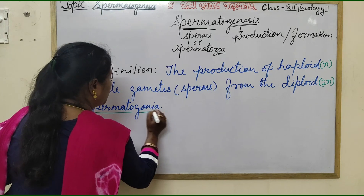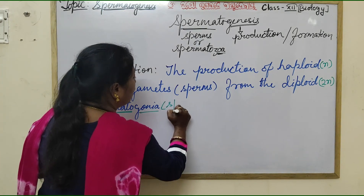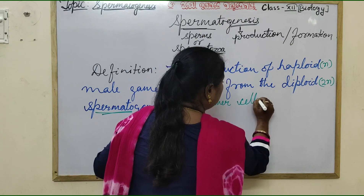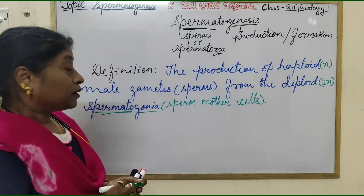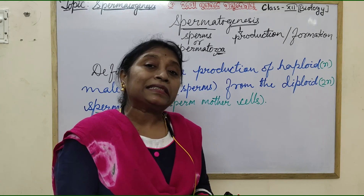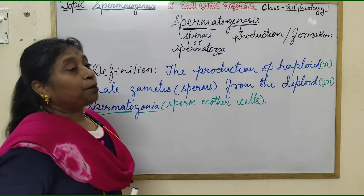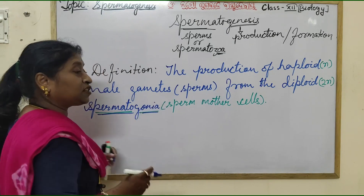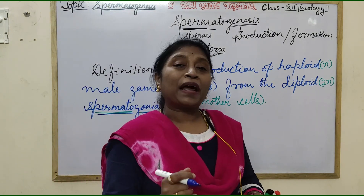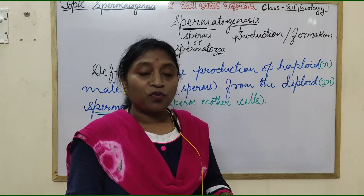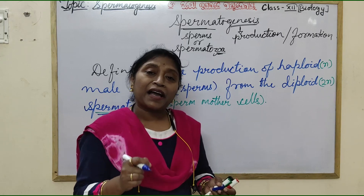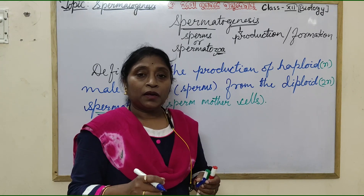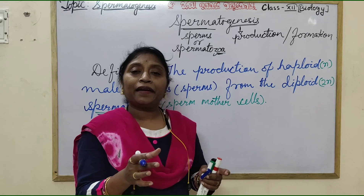What is spermatogonia? Spermatogonia are the sperm mother cells. The spermatogonia are the successors of the primordial germ cells — meaning they are derived from primordial germ cells. The primordial germ cells are derived from the endodermal layer of the yolk sac, specifically the posterior part of the endodermal layer of the yolk sac.